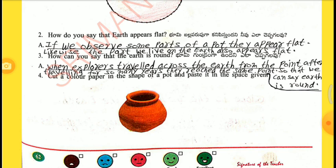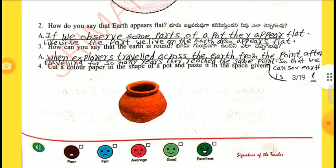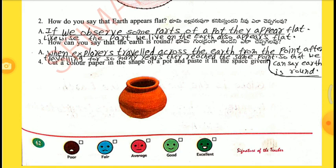Third question: How can you say that the earth is round? When explorers travel across the earth from one point, after traveling for so many years, they reach the same point. So that we can say the earth is round. Fourth activity: cut a colored paper in the shape of a sphere and paste it in the space given.